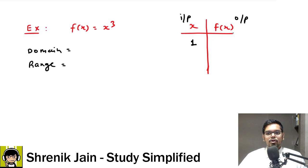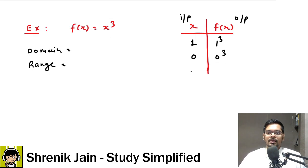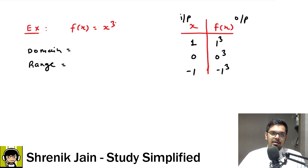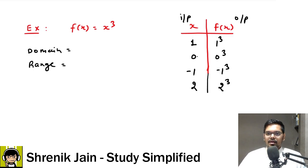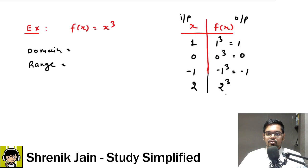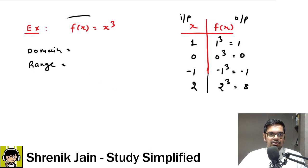Continuing with f(x) = x³: if input is 2, output is 2³ = 8. So the mapping is: input 1 → output 1, input 0 → output 0, input −1 → output −1, input 2 → output 8. Now, what is the domain and range of this function?